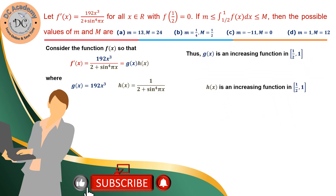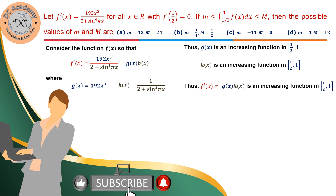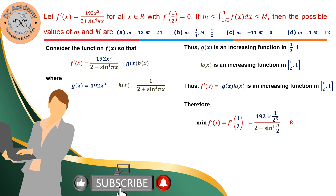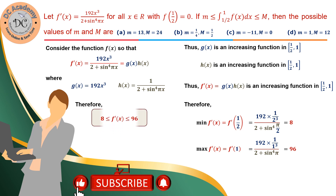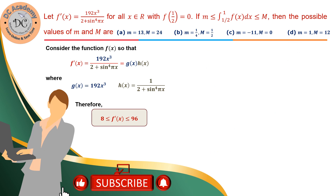Since both g(x) and h(x) are increasing on [1/2, 1], their product f'(x) = g(x)·h(x) is also increasing. Therefore the minimum of f'(x) occurs at x = 1/2, giving f'(1/2) = 8, and the maximum occurs at x = 1, giving f'(1) = 96. So 8 ≤ f'(x) ≤ 96.